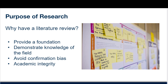Thorough research also prevents confirmation bias — only looking for material that supports your view. By exploring in depth, you may find different policies or ideas that strengthen your thesis. A clear literature review or background section also leads to academic integrity. It demonstrates that you are aware of the major divisions and agreements in the field and that you are drawing on research, not personal opinion.